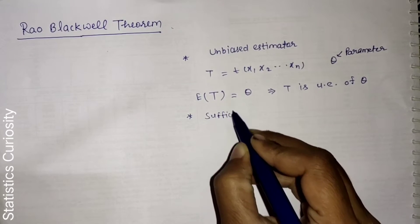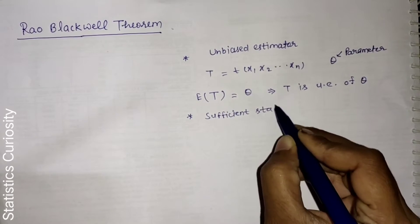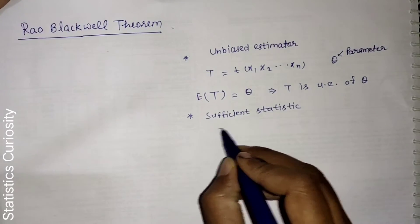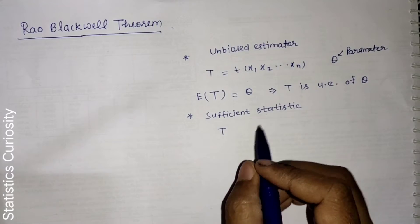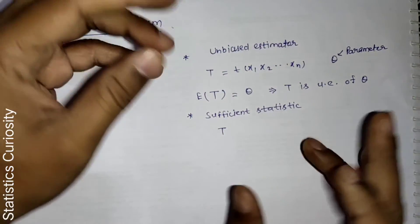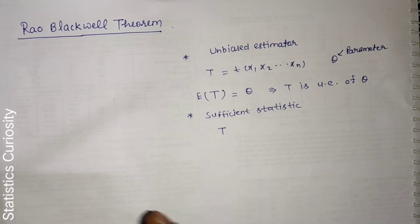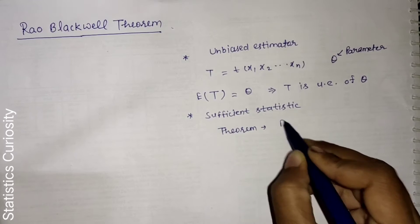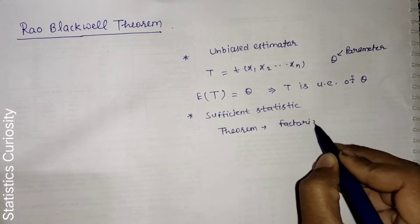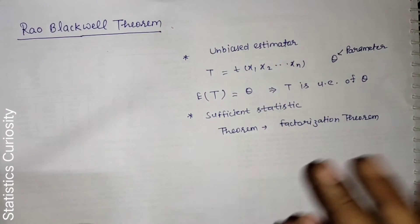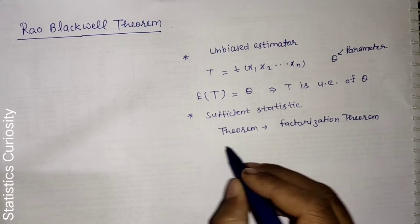The second term is sufficient statistic. Let T be a statistic — a function of sample values. T is called a sufficient statistic for theta if it contains full information about theta. To find a sufficient statistic, we use the Neyman factorization theorem.